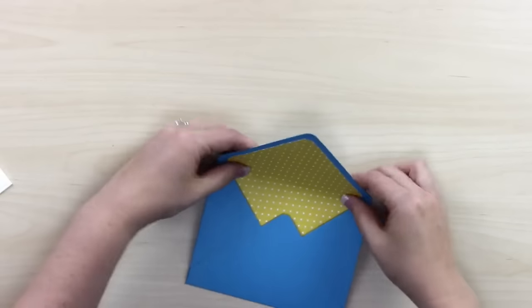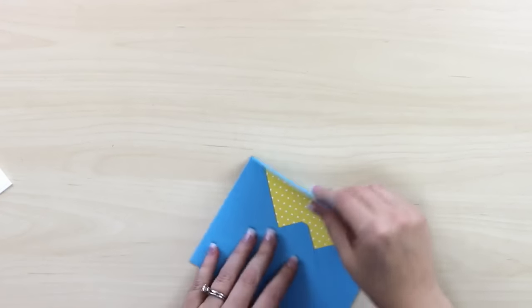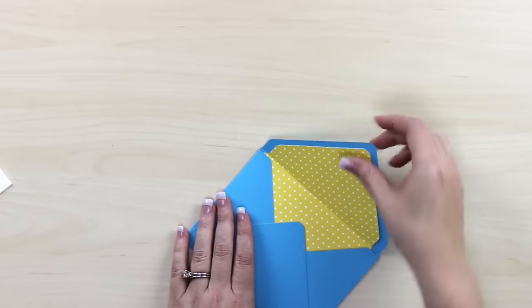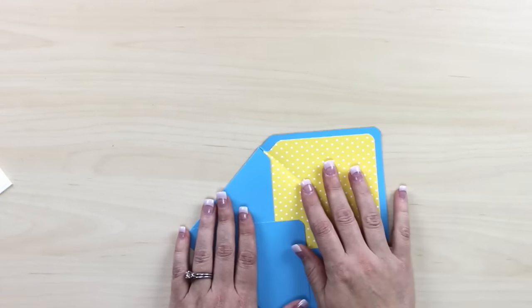When I go to fold this over, that's when I'll get the fold in my patterned paper. But we don't want to tack down that bottom part because as we open and close our envelope, that bottom section is going to move.